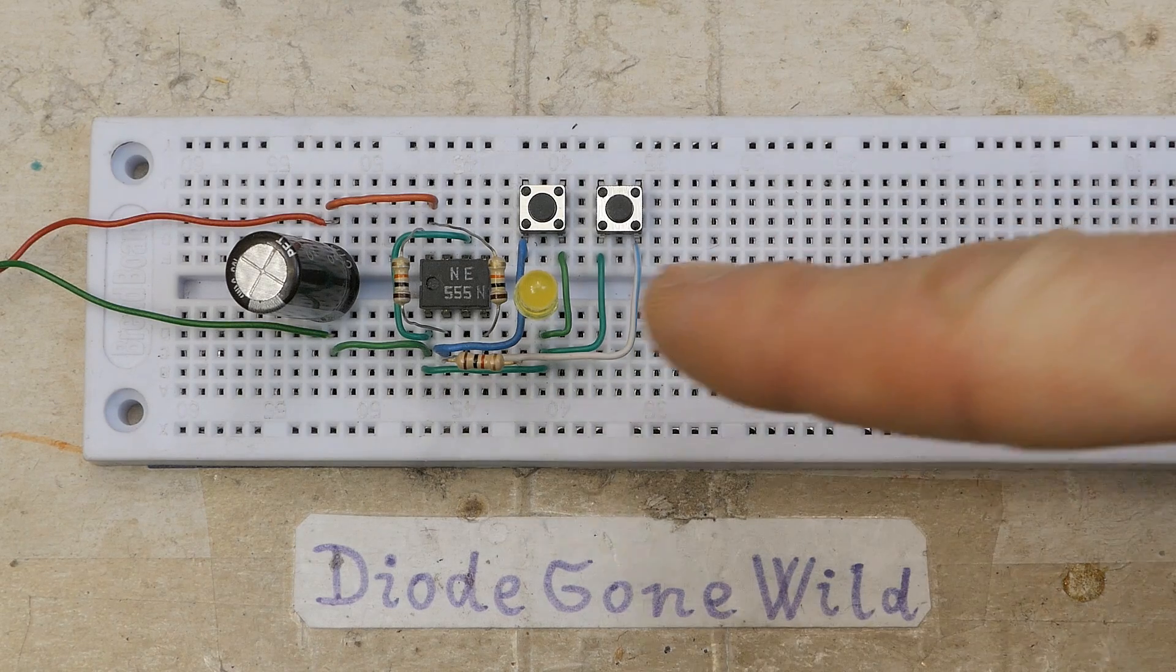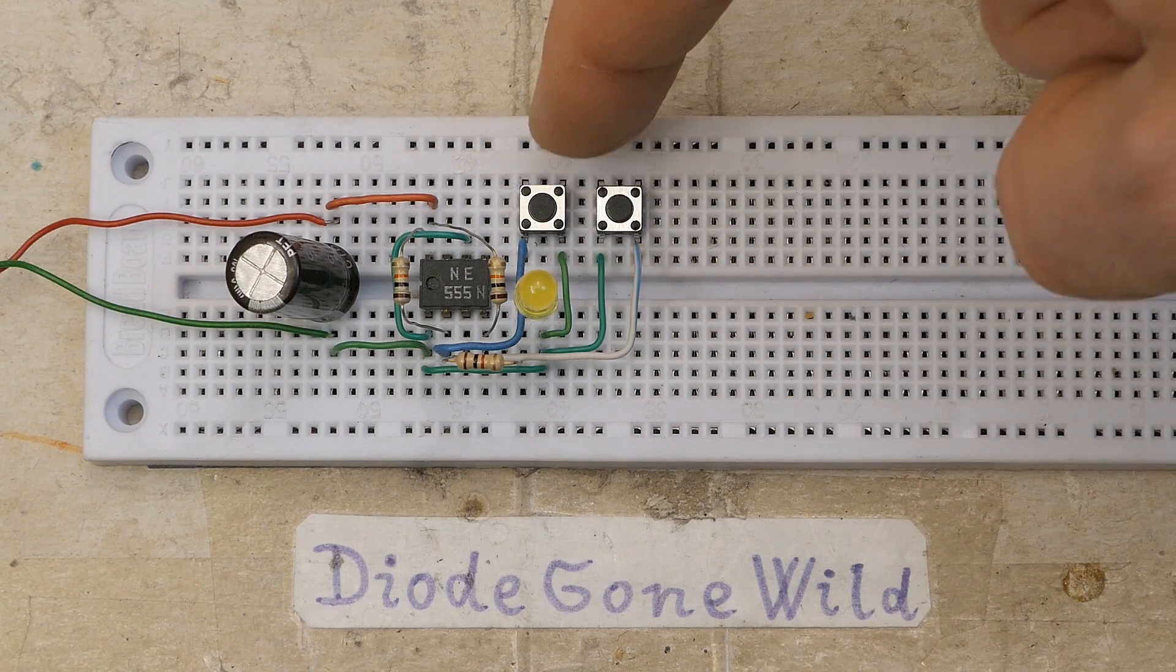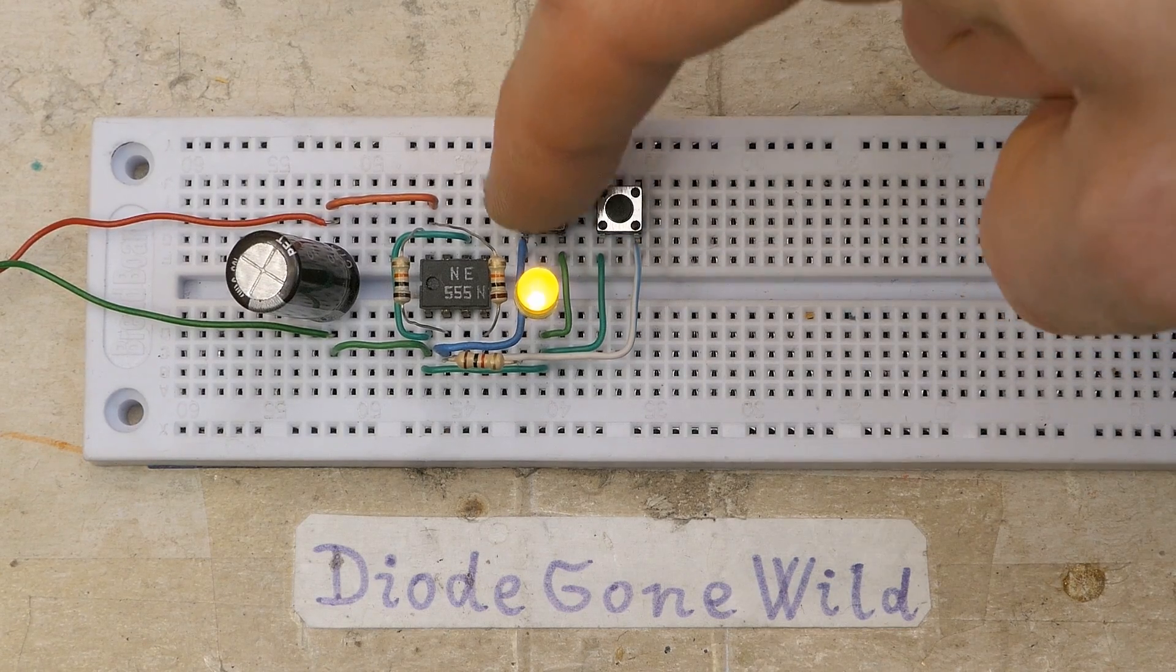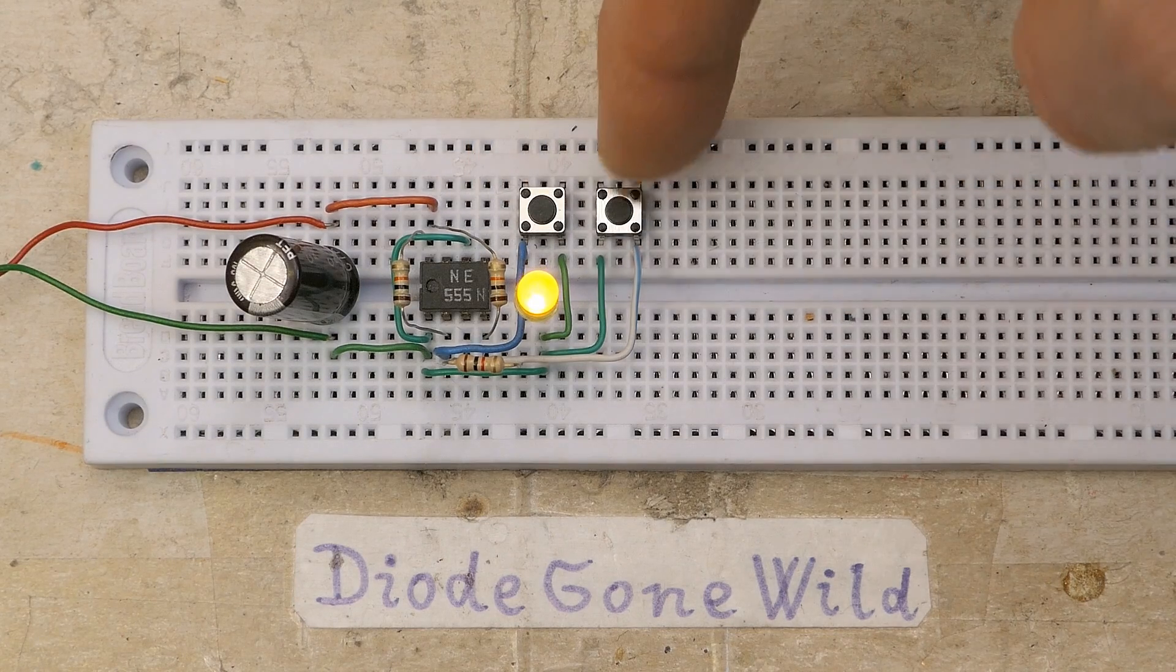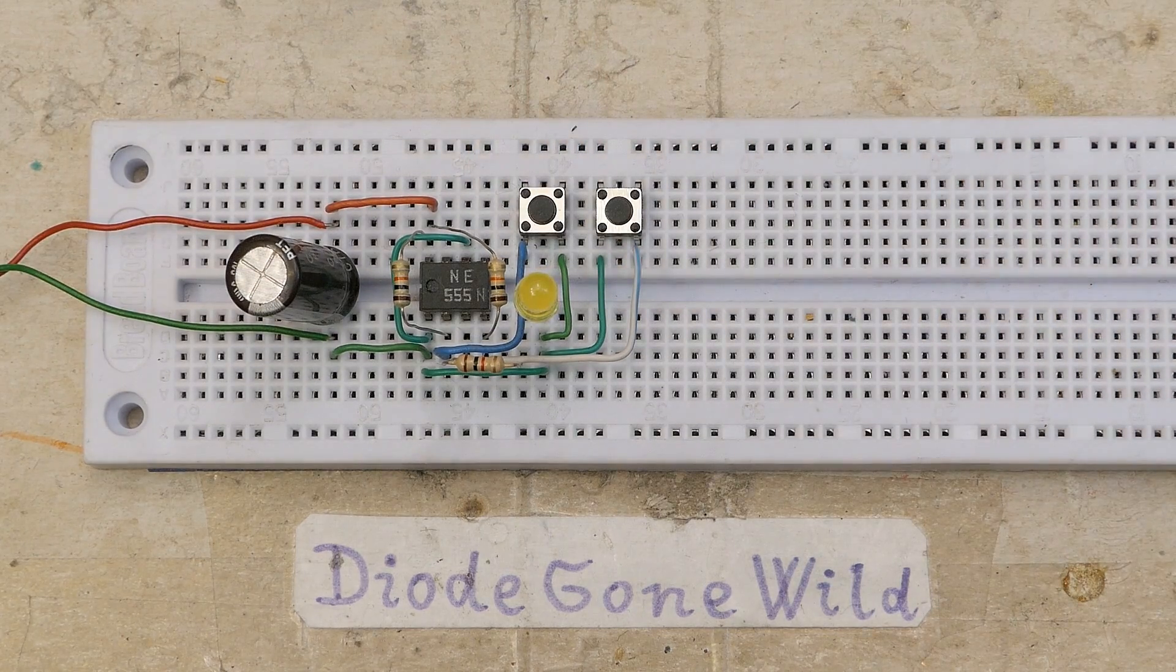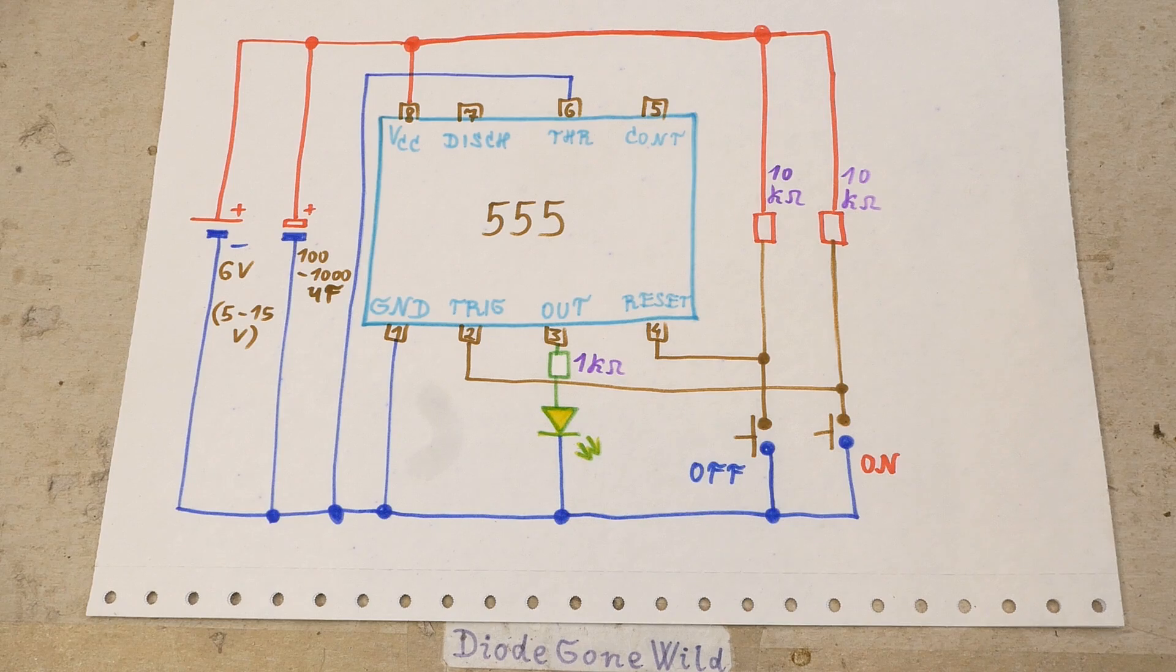In this case it has an LED as a load at the output and two buttons, and you can flip it on and off using the buttons. This is the on button and this is the off button. And here's the simple schematic of it.